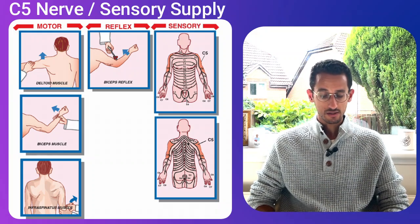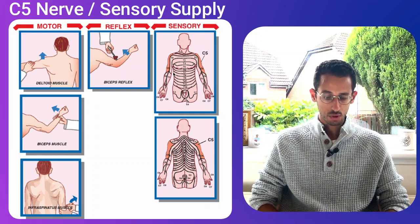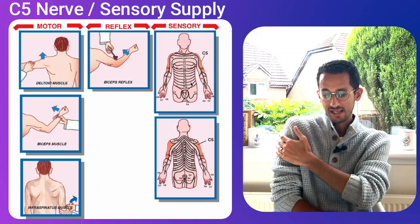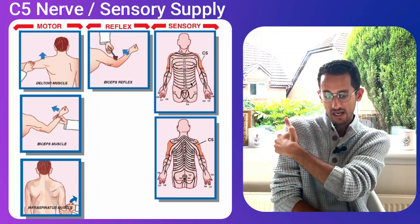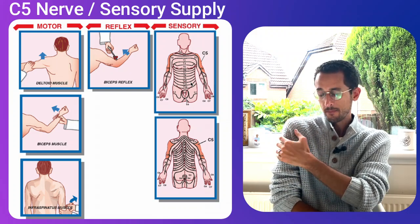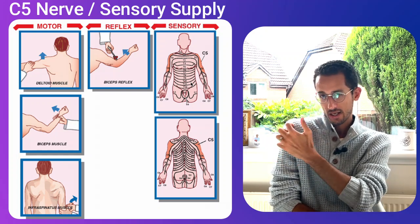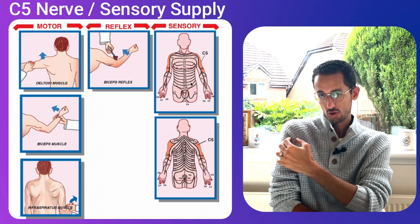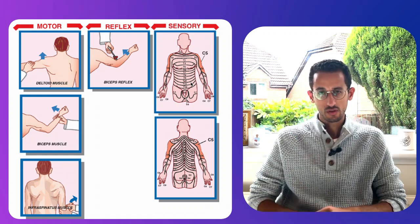Finally, the sensory supply for C5: as you can see from this dermatomal distribution, it supplies a patch covering the lateral aspect of the arm, both from the front and from the back. The main area you can test is a patch around the tip of the shoulder near the deltoid muscle — that is the primary area where you test for the C5 nerve root.